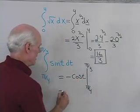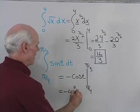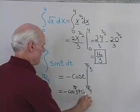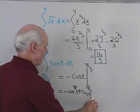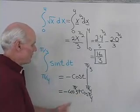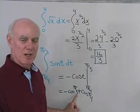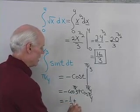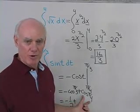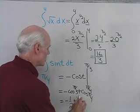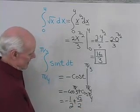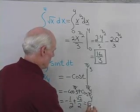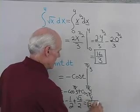So this is negative cosine t evaluated from π/4 to π/3. That gives: negative cosine(π/3) minus negative cosine(π/4), which is negative cosine(π/3) plus cosine(π/4). Cosine of π/3 — that's 60 degrees — is 1/2, so negative 1/2. Plus cosine of π/4 — that's 45 degrees — which is √2/2. I can write this a little simpler as (√2 − 1) all divided by 2.